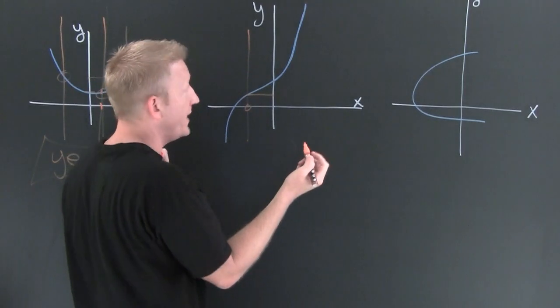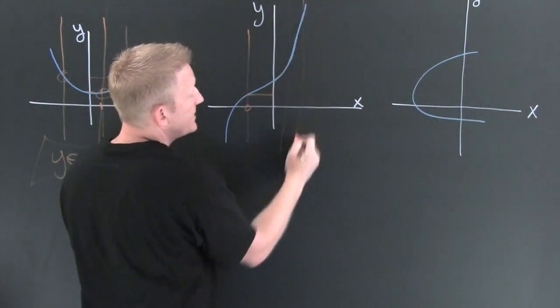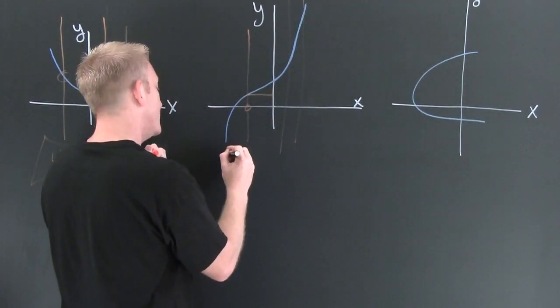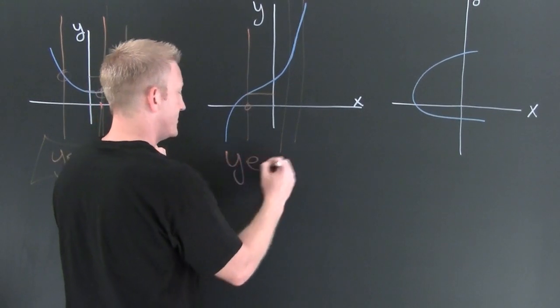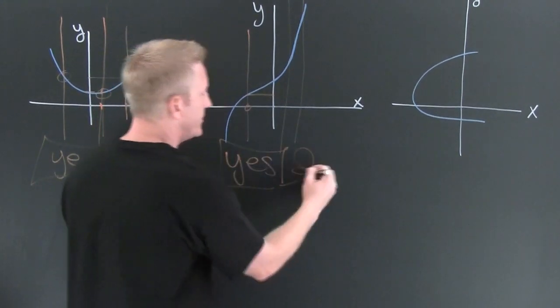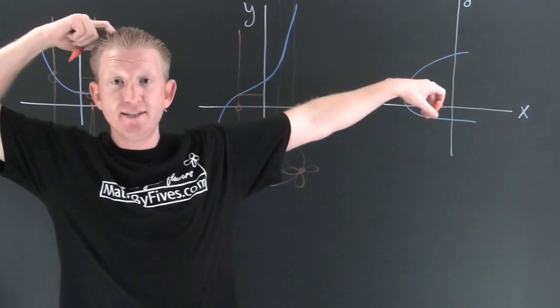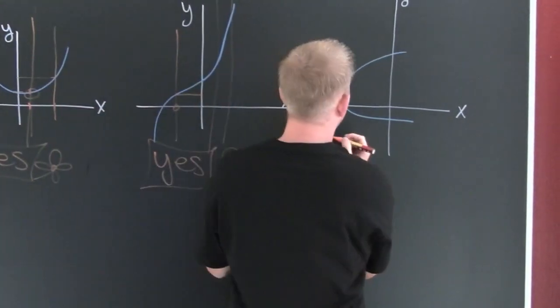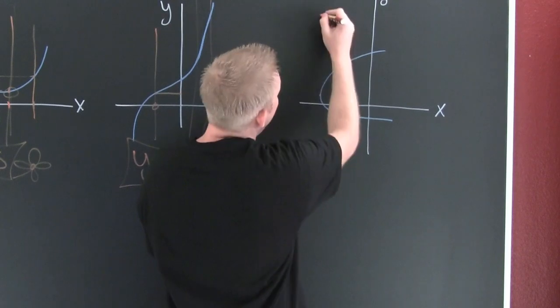Let's look at this next one. Okay, so it appears here that each domain element corresponds to exactly one range element. I'm using the vertical line test to determine that. Yes, this one is a function.